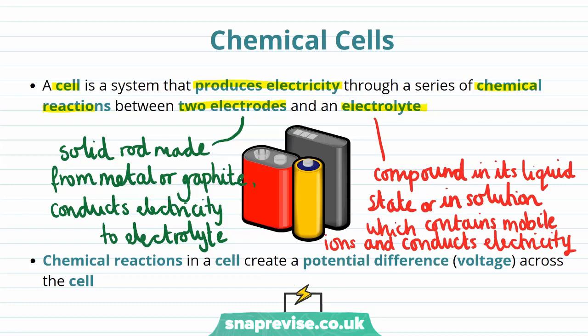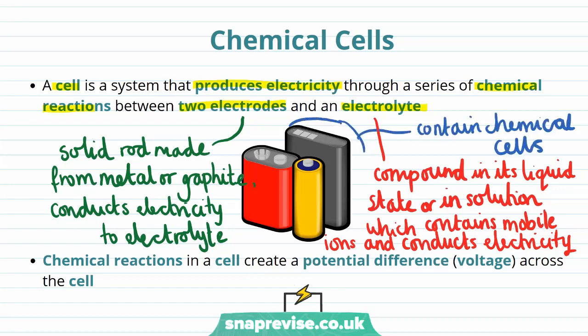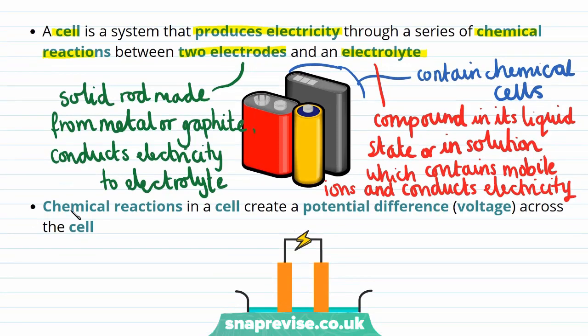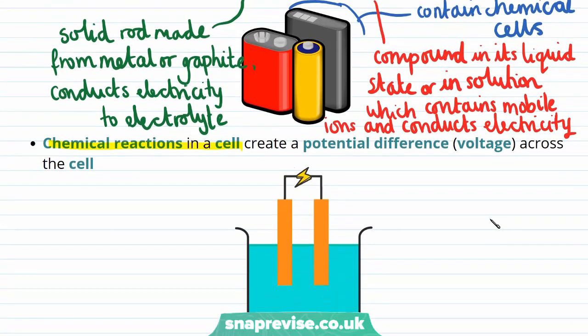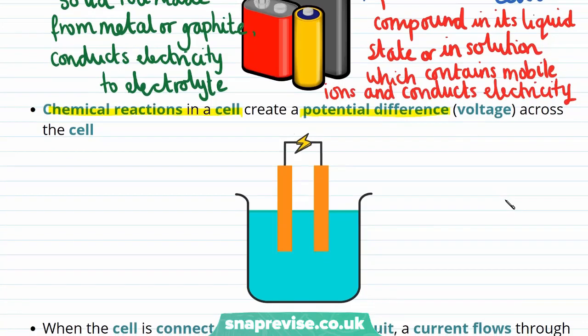The difference between a cell and the setup for an electrolysis reaction is that in electrolysis you need to provide an external source of electricity. However, a cell produces its own. Batteries contain chemical cells, meaning that inside a battery you have a series of chemical reactions taking place between two electrodes and an electrolyte that causes it to produce electricity. Chemical reactions in a cell produce a potential difference across the cell.